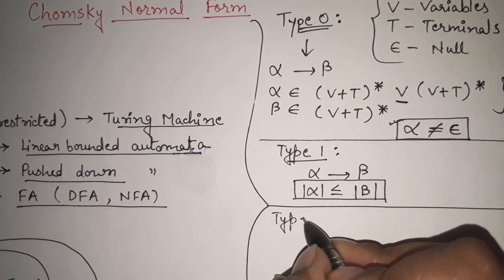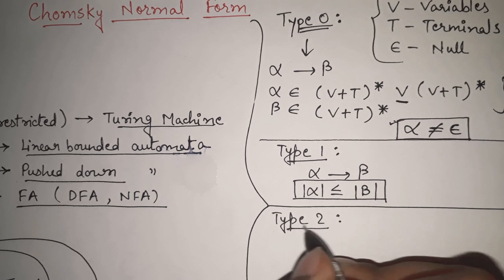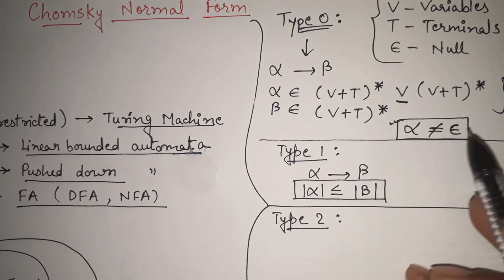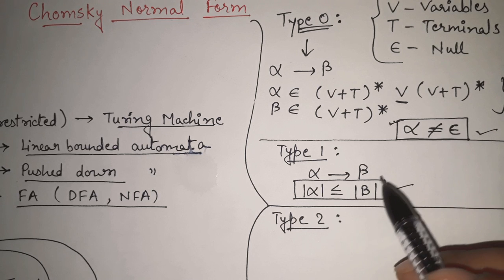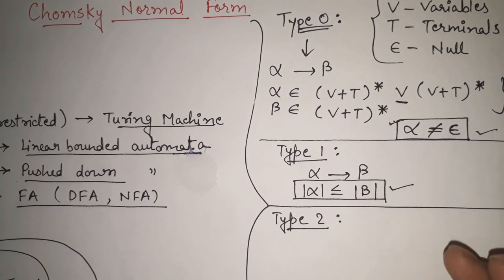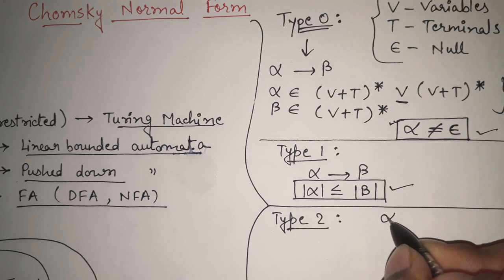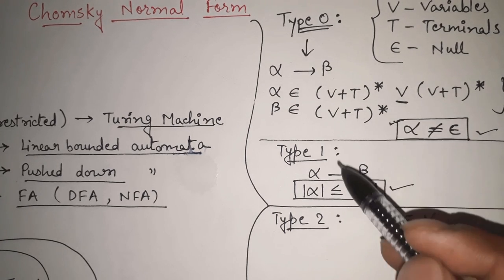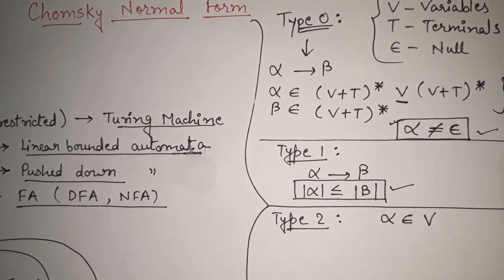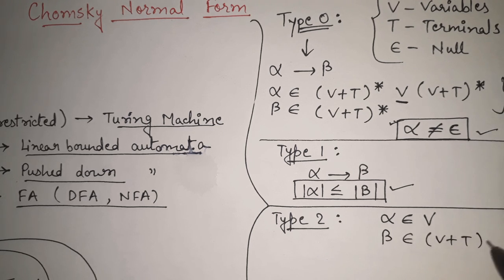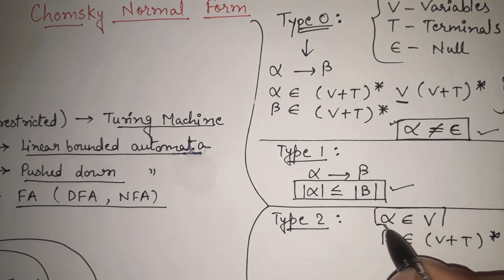For type 2 — context-free grammar — the restrictions from type 0 and type 1 are already present. The additional restriction for type 2 is that alpha must contain only one variable; it cannot contain terminals. Beta can still contain variables, terminals, or null with no restriction. So alpha is restricted to a single variable only.